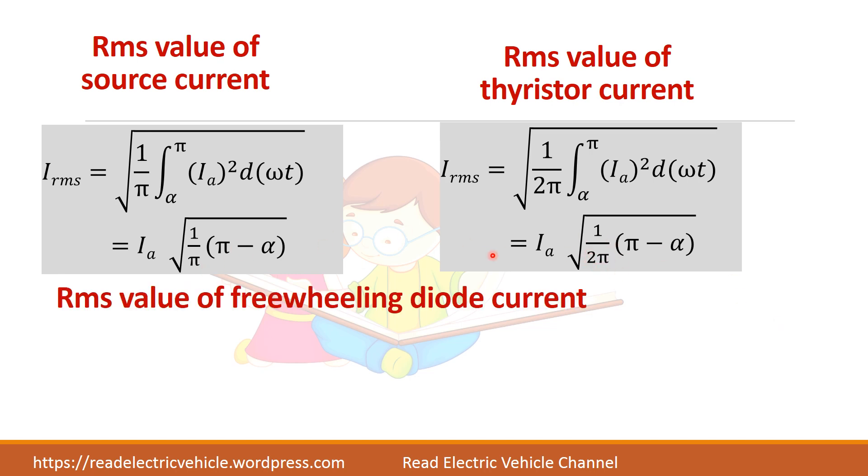Then we can find the RMS value of freewheeling diode also. So freewheeling diode current will be available only for 0 to alpha period. This is for half cycle. So 1 pi pi is 0 to alpha. So this is for freewheeling diode.